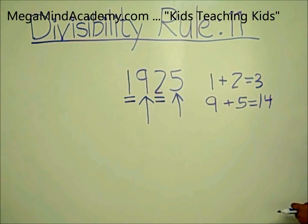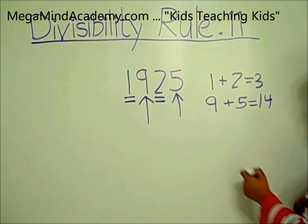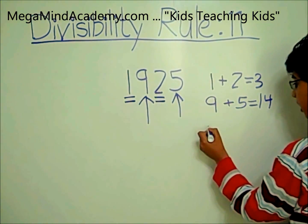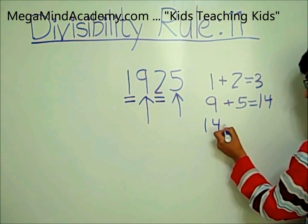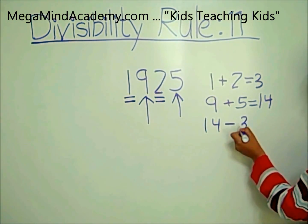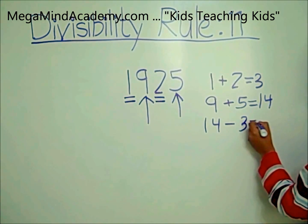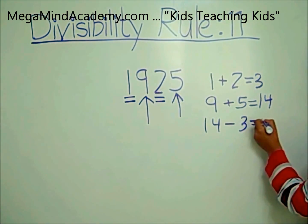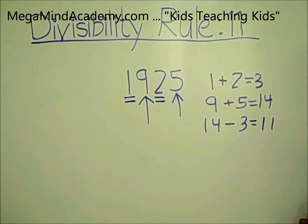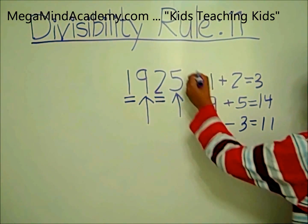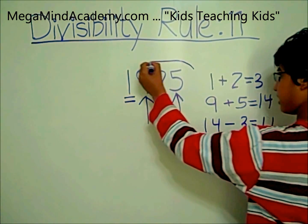Now we have to subtract 3 from 14. So it becomes 14 minus 3 which equals 11. Since 11 is divisible by 11, 1,925 is divisible by 11.